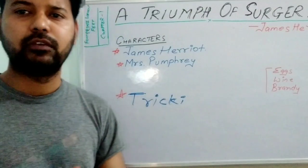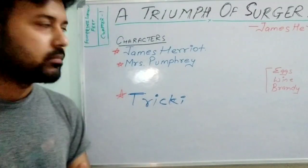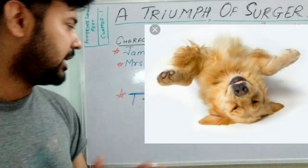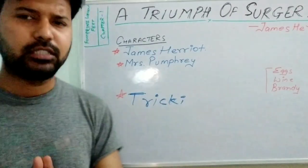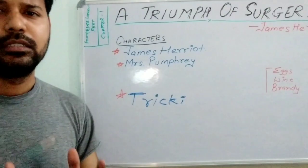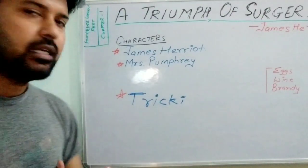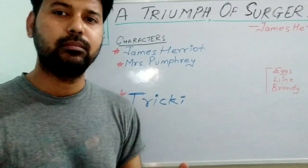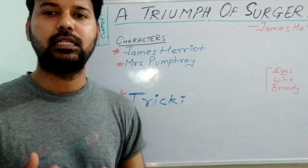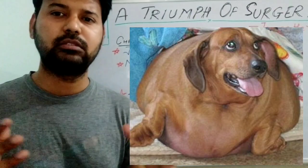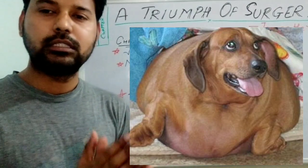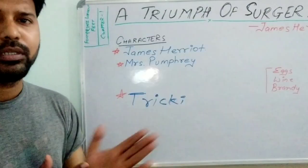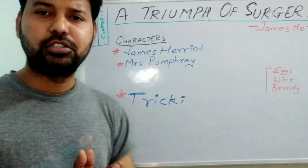Another character is Mrs. Pumphrey, who is a very lavish and very rich person residing in the city. She has a small beautiful dog named Tricky. Because she is very rich and lavish, the same thing reflected on Tricky — she overfed him, and because of that, this small dog became very lazy and bloated. Bloated means very fat, and the dog looked like a piece of meat with only legs sticking out.